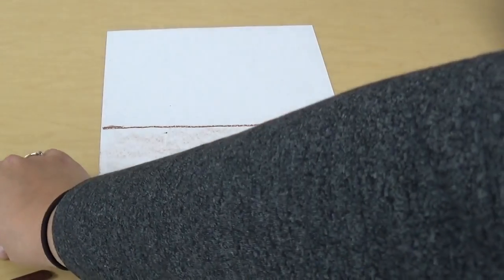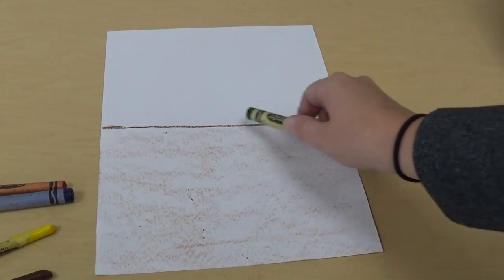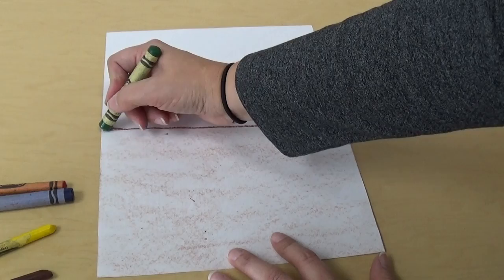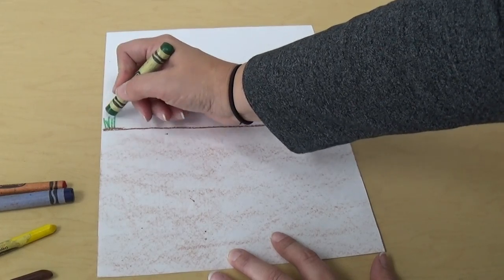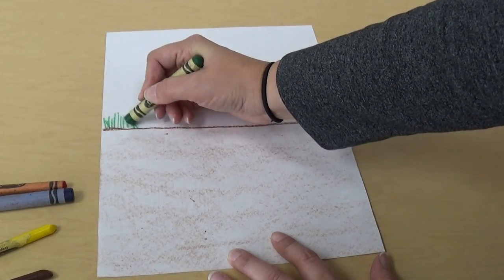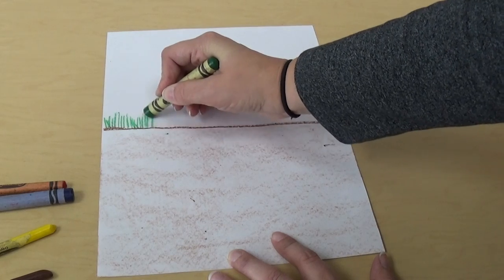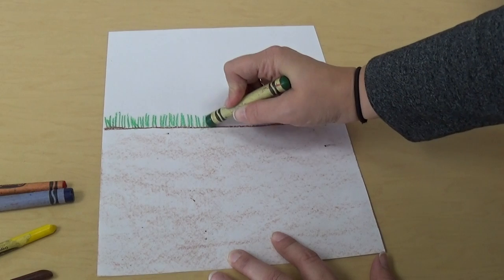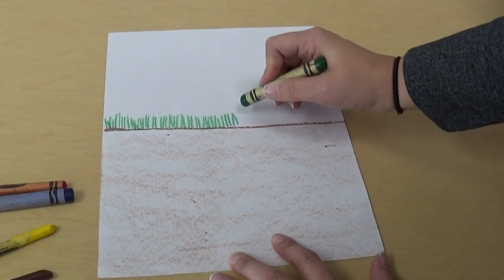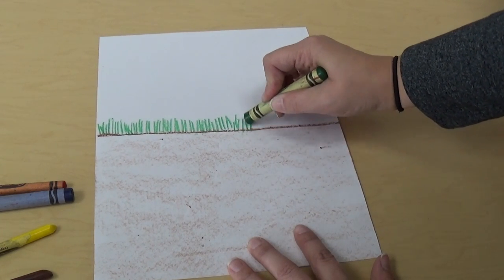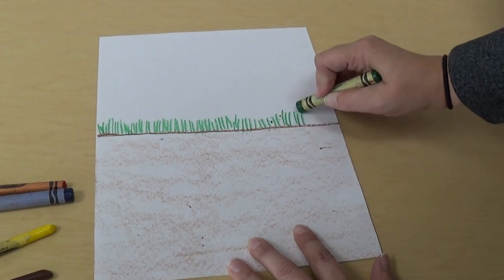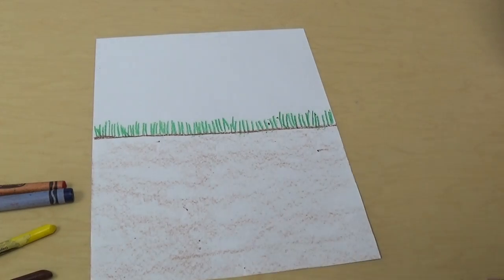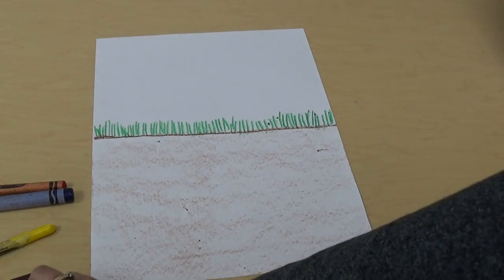And then up above, this is where the dirt ends, and this is where the sky begins. So I'm going to draw some grass. I'm pressing kind of hard, getting that grass in there. And so I have my grass.